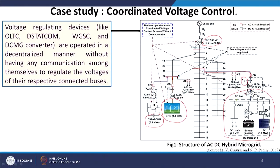Voltage regulating devices like OLTC, DSTATCOM, and DFIG converters are operated in a decentralized manner. That means all the devices operate without any communication — they try to improve the voltage profile at the particular bus where they are connected, but they do not communicate with each other for the overall system benefit. They regulate voltages in their own way at their respective buses, but do not look at other buses.